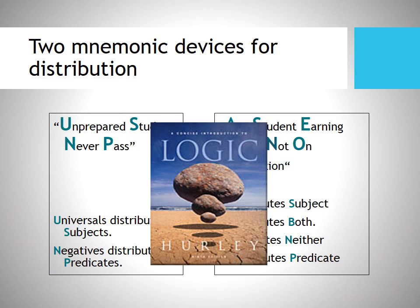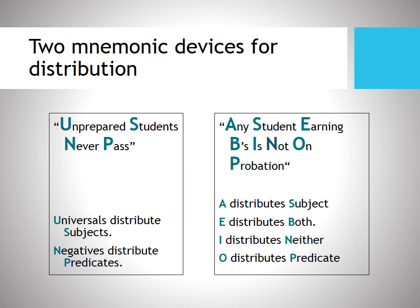Well, Patrick Hurley's logic book gives us some mnemonic devices that might be helpful for you, and I'm going to list them right here. Unprepared students never passed. That basically stands for universals distribute subjects and negatives distribute predicates. But the one I like better is any student earning B's is not on probation. That's an easy way to remember that A sentences distribute the subject, E sentences distribute both the subject and predicate, I sentences distribute neither, and the O sentences, well, they distribute the predicate as we just explained.